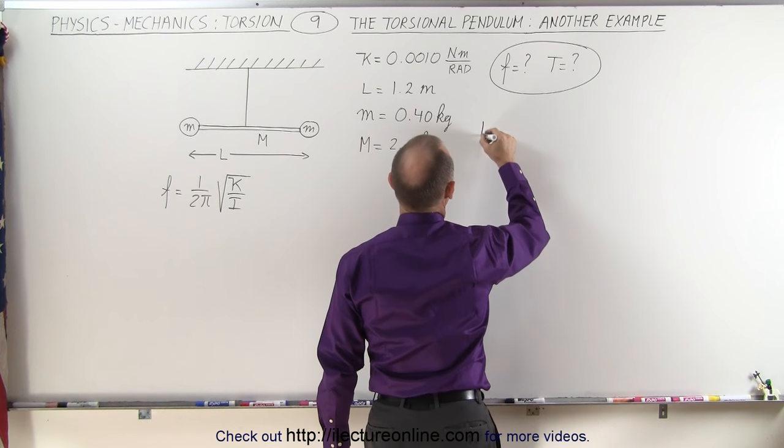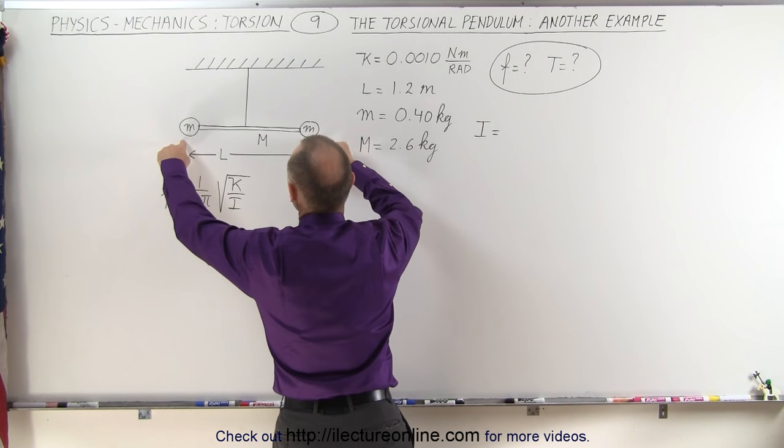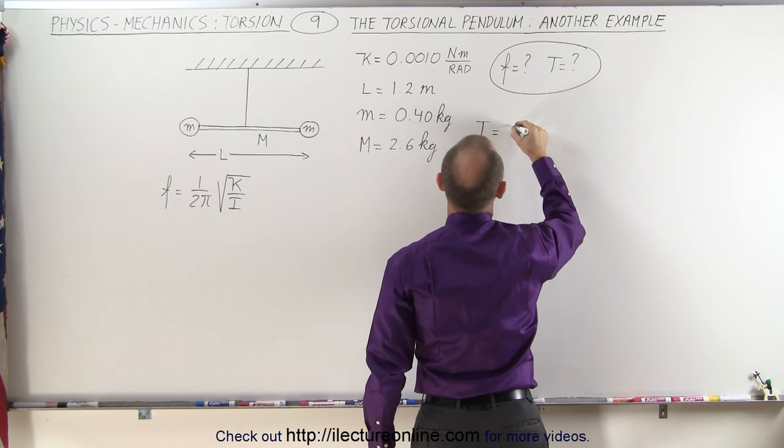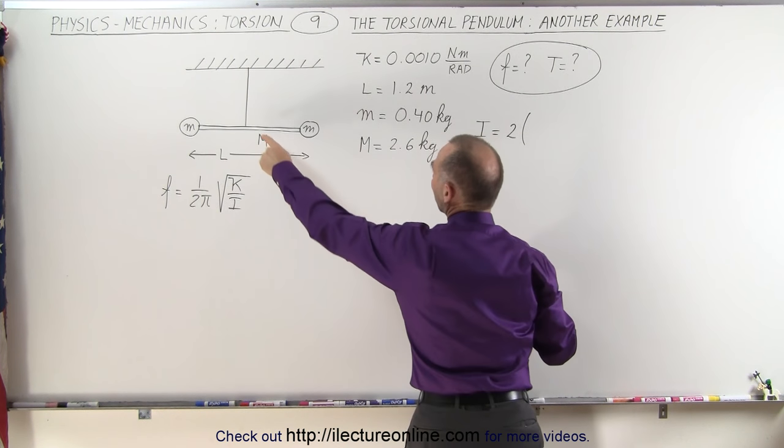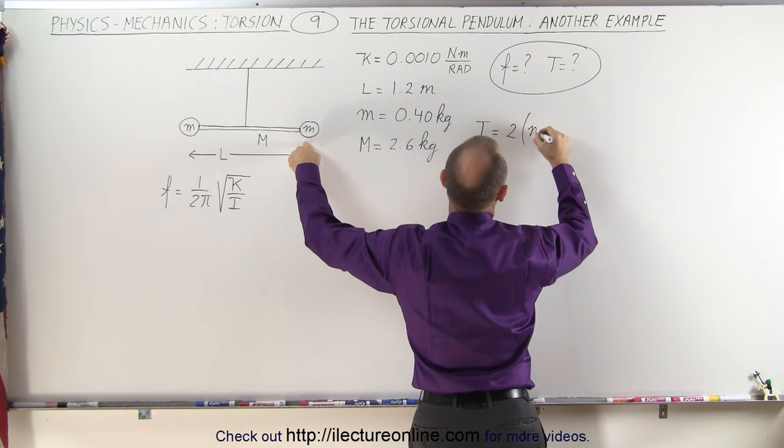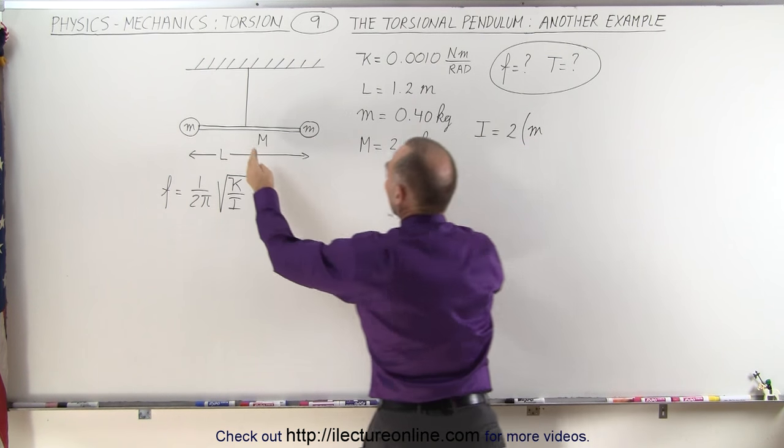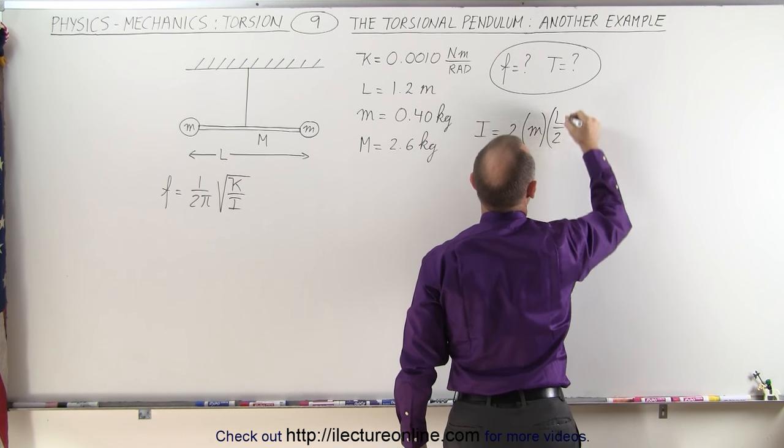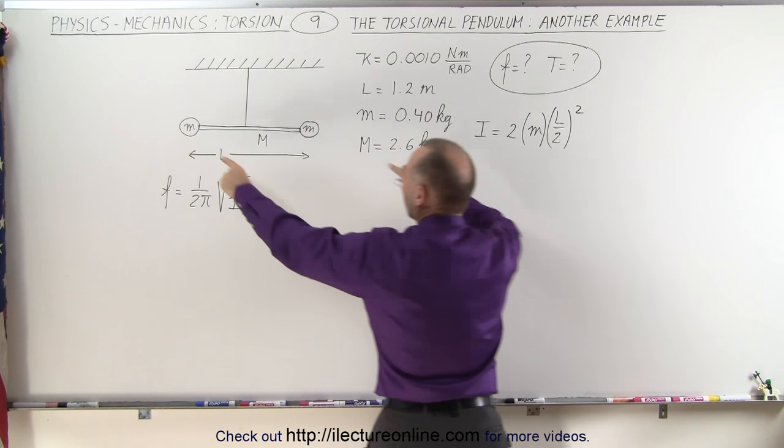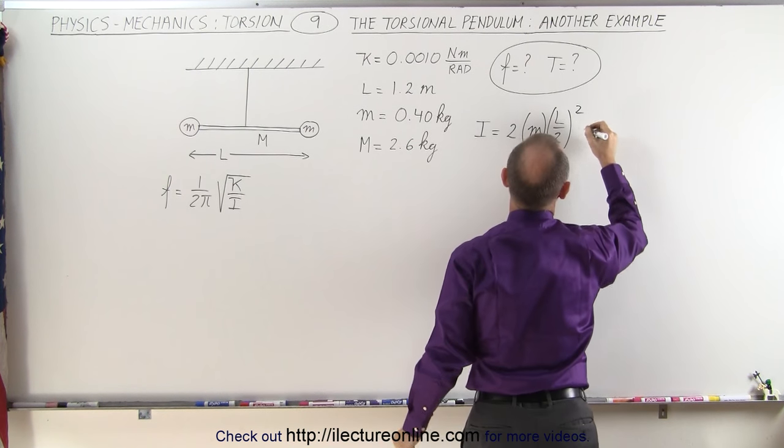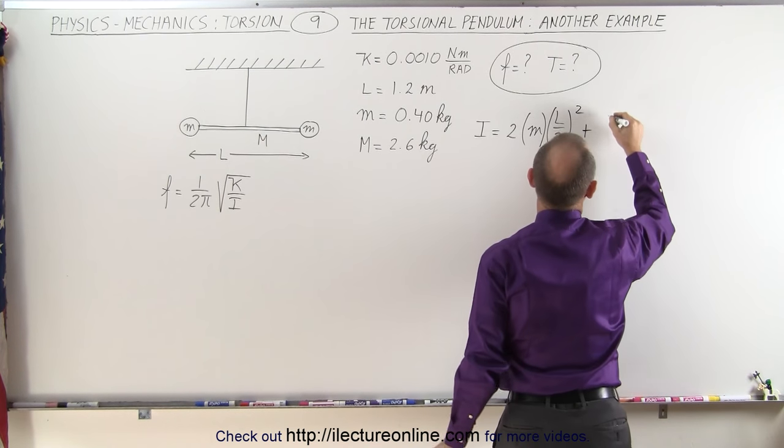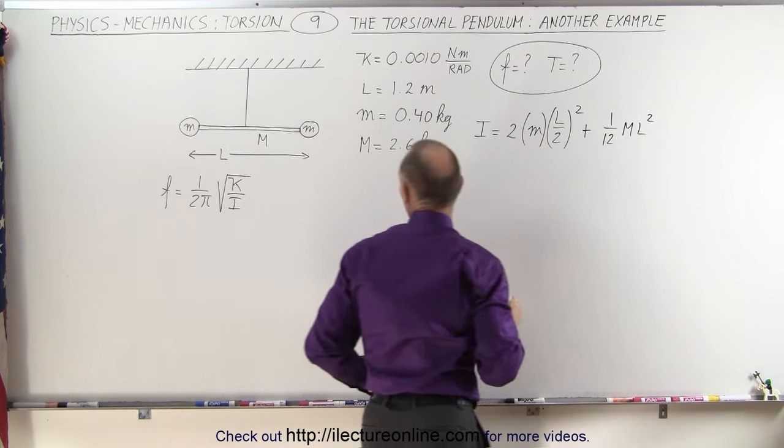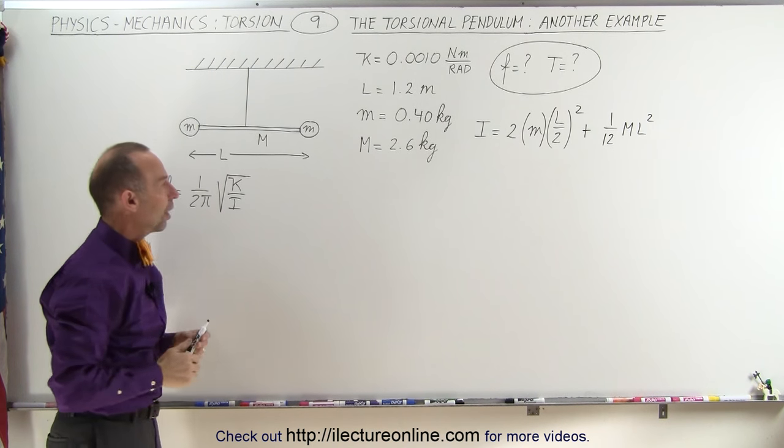The moment of inertia will be equal to the sum of the moment of inertia of the two small masses plus the mass of the rod. So this would be 2 times m times (L/2)² plus the moment of inertia of the rod, which is 1/12 the mass of the rod times the length squared, because it's rotating about the center of mass of the rod.